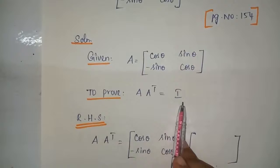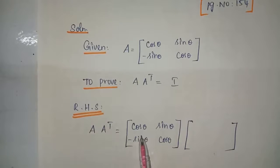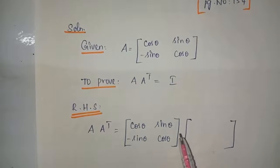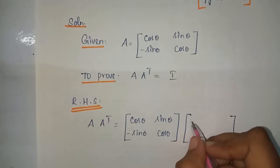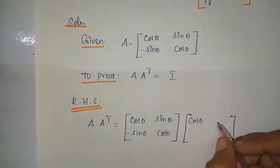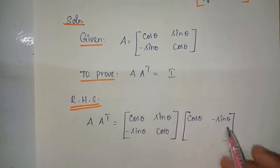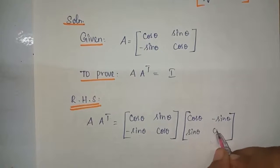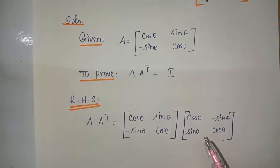We know matrix A, so we have to find matrix A transpose. A transpose is formed by making rows into columns and columns into rows. In matrix A, cos theta minus sin theta is the column — it will become a row in A transpose: cos theta minus sin theta. The second column sin theta cos theta will become the second row. Now do the normal matrix multiplication to get the identity matrix.